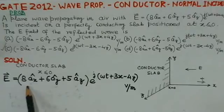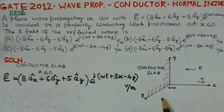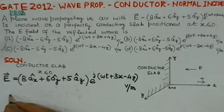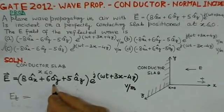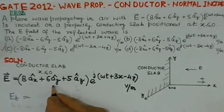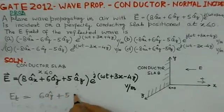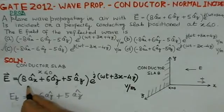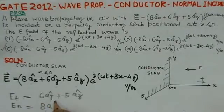The tangential field components are those in the Y and Z directions, so the tangential component ET equals 6AY + 5AZ. Since X is normal to the interface, the normal component is 8AX.